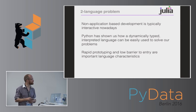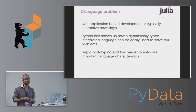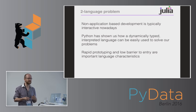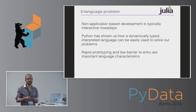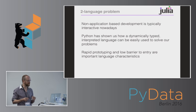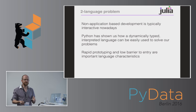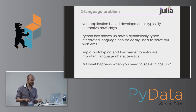Rapid prototyping and a low barrier to entry are very important language characteristics nowadays. In an agile programming framework, people want to see their results quickly and don't want to spend a lot of time figuring out minor language nuances — whether to use a bit shift or some other function to gain the last bit of speed. They really just want to sit down at the computer and address the problem they're thinking about.